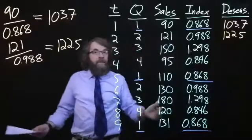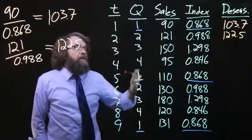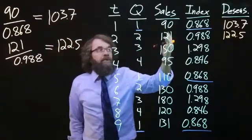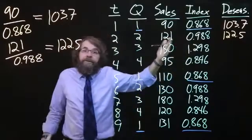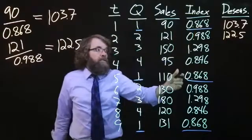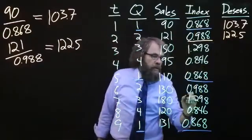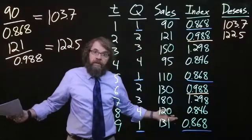And we just keep going like that. Really, the only thing to keep in mind is to make sure that you're taking the original sales numbers and dividing them by the seasonal index. The only trick is to make sure that you always use the right seasonal index. Use the first quarter one for the first quarter, the second quarter numbers for every second quarter, et cetera. It's really fairly straightforward.